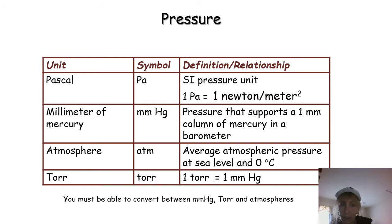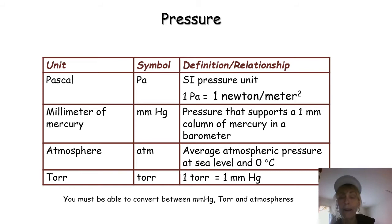Another unit of pressure is millimeters of mercury. One standard atmosphere, or 101.3 kilopascals, or 14.7 pounds per square inch, is equivalent to 760 millimeters of mercury. The torr is yet another standard pressure unit — 760 torr equals 760 millimeters of mercury, 14.7 pounds per square inch, 101.3 kilopascals, and one standard atmosphere. Here we have a table of the various pressure units — they are all equivalent to one another. Kilopascal simply has the prefix kilo.